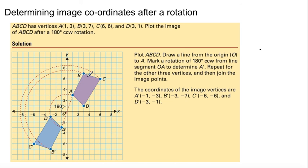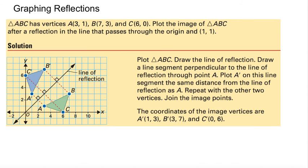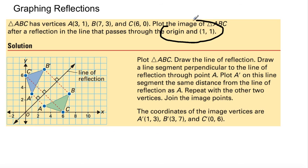Sometimes you're going to be asked to make a line of reflection. This is your line of reflection. Back to reflections again — but now you'll be asked to make a line of reflection, as opposed to the y-axis or x-axis being your line. Triangle ABC has vertices A (3, 1), B (7, 3), and C (6, 0). Plot the image of triangle ABC after reflection in the line that passes through the origin and (1, 1).